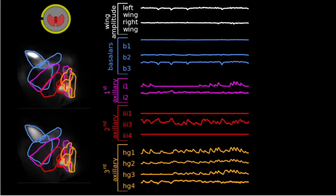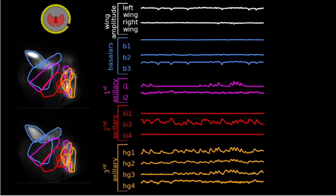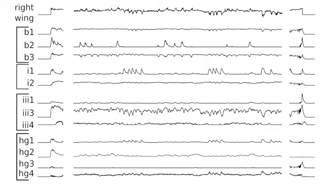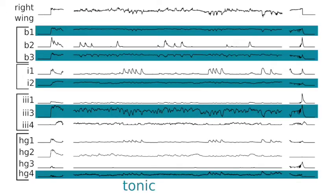After examining the data from all 12 muscles and comparing them to measurements of wing motion, we discovered that the direct flight muscle system could be classified into two groups based on their activity.